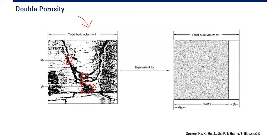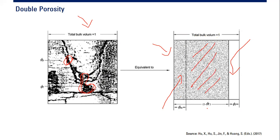In simulation, we cannot copy the real picture directly into the model. We perform averaging, so schematically there is a space representing fracture porosity and a space representing matrix porosity, with the matrix block occupying (1 minus fracture porosity) of the volume.